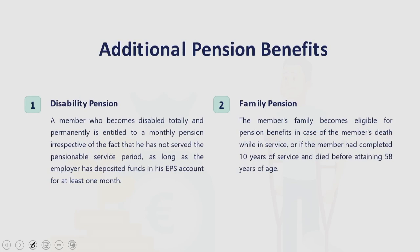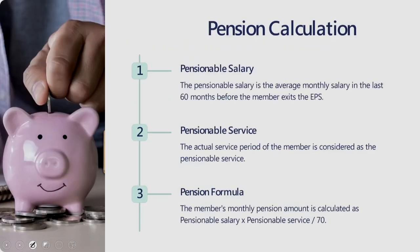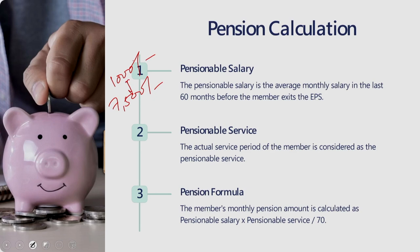Now let us look at pension calculation. There is a minimum and maximum pension amount: the minimum pension under EPS is Rs. 1,000 per month and the maximum is Rs. 7,500 per month, on the condition that no pension contribution is paid on amounts beyond the statutory ceiling. The components involved in calculating pension are: pensionable salary, pensionable service, and the pension formula. The pension formula calculates the member's monthly pension as: Pensionable Salary × Pensionable Service ÷ 70.